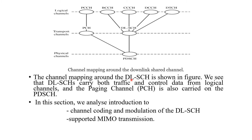This diagram shows the channel mapping around the downlink shared channel, analyzed in the previous portion of Module 3. The downlink shared channel carries both traffic and control data from the logical channels, and the paging channel is also carried on this PDSCH. In this section we provide an introduction to channel coding, modulation of the DL-SCH, and the different supported MIMO transmission modes.